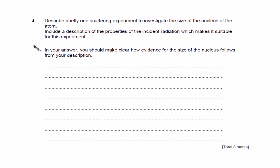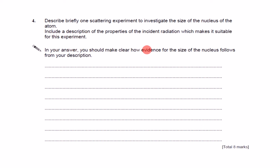Question four. Describe briefly one scattering experiment to investigate the size of the nucleus of the atom. Include a description of the properties of the incident radiation which make it suitable for this experiment. In your answer, you should make clear how evidence for the size of the nucleus follows from your description.